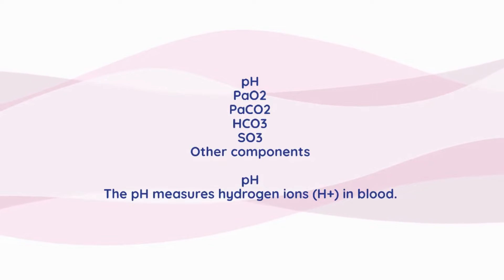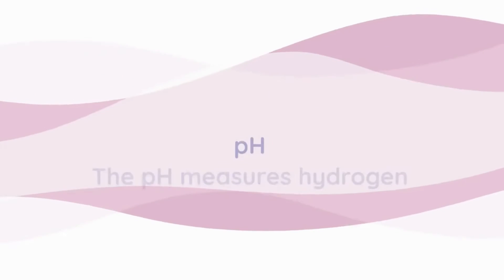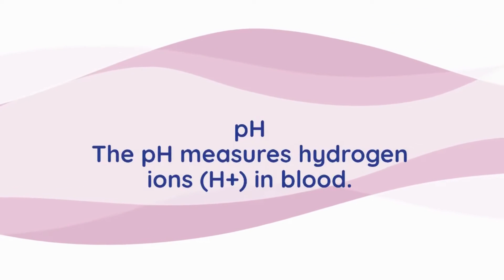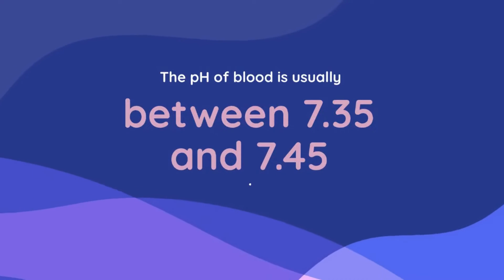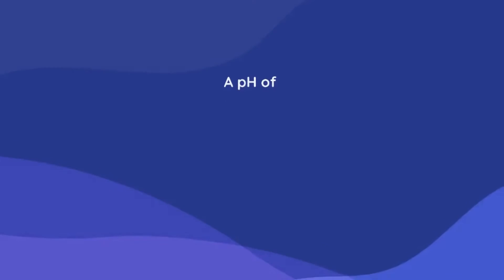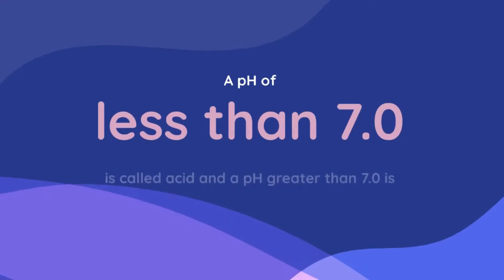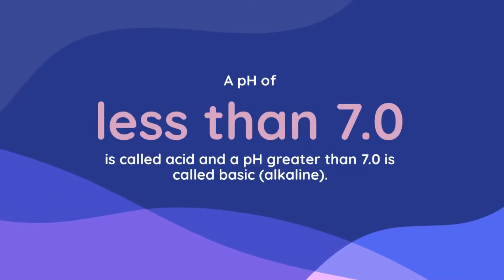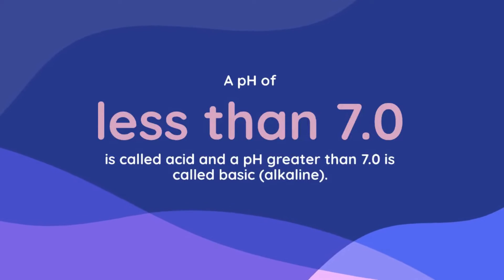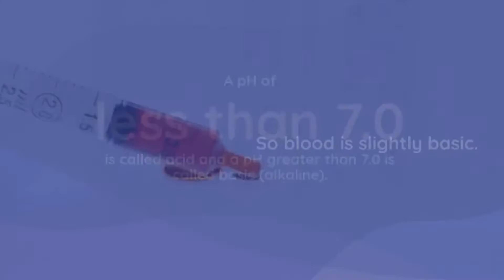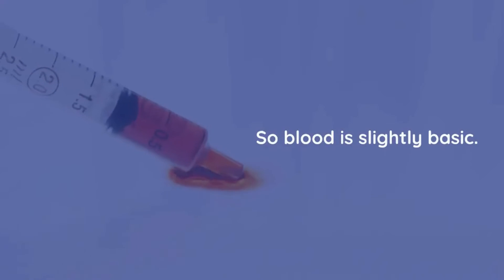First, pH. The pH measures hydrogen ions in blood. The pH of blood is usually between 7.35 and 7.45. A pH of less than 7.0 is called acidic, and a pH greater than 7.0 is called basic or alkaline. So blood is slightly basic.